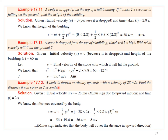Problem: A body is thrown vertically upwards with velocity 28 m/s. Find the distance it will cover in 2 seconds. Since it is thrown upwards, u = −28 m/s. Using s = ut + ½gt², substituting u = −28, t = 2, and g = 9.8, we calculate the total distance covered by the body in 2 seconds.